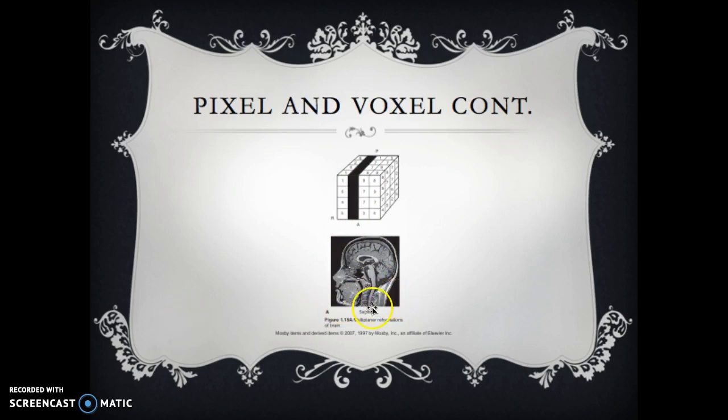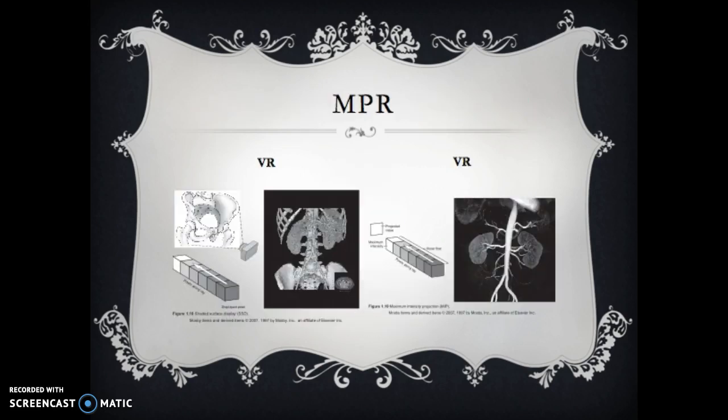This is a sagittal T1 of the brain, MRI. Using those pixels and voxels, using the voxels, we can go ahead and do volume rendering, VR, volume rendering, where we can take the stack and we can manipulate it in any different plane.